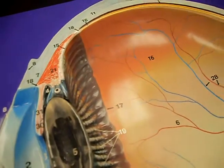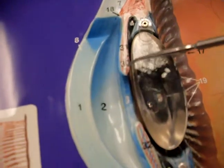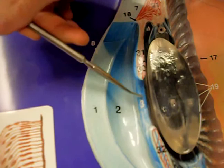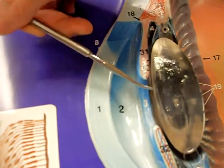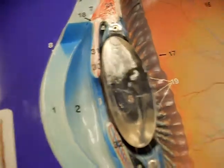Also in the vascular tunic is the iris, this part here, that opens and closes, dilating the pupil. The pupil is not a structure—it's just the opening.